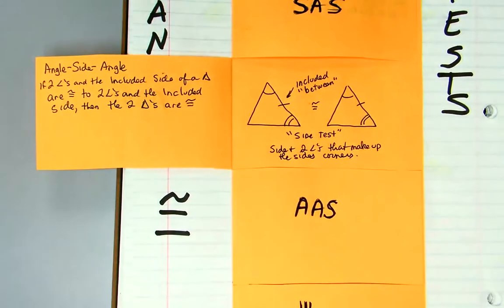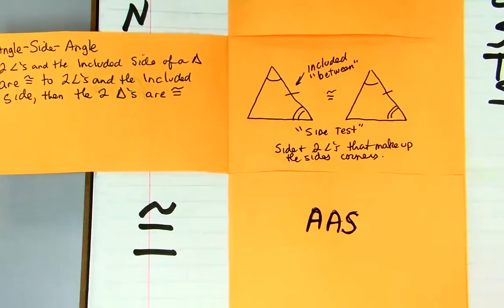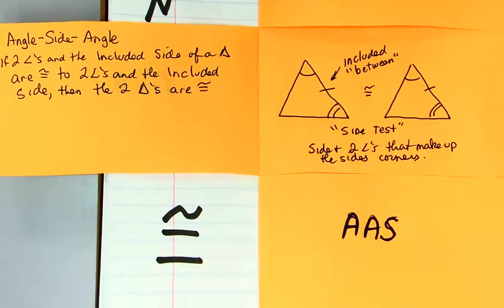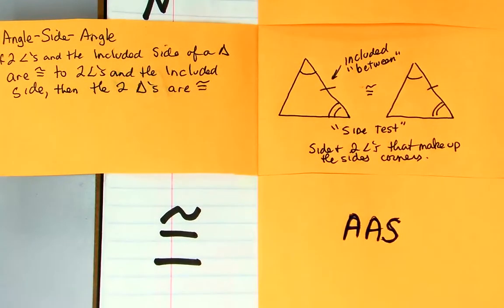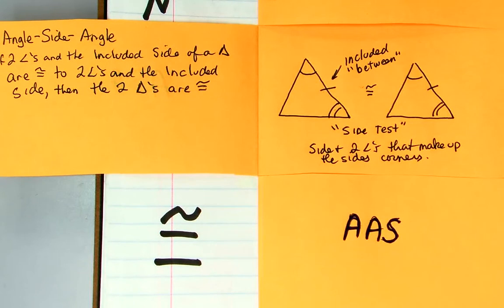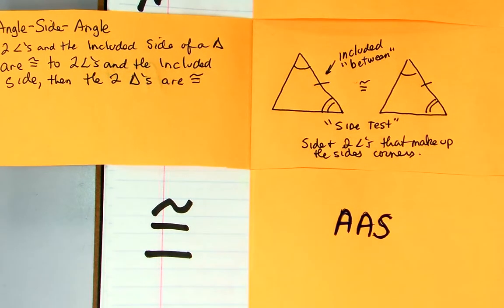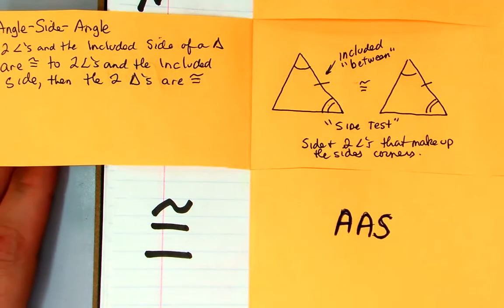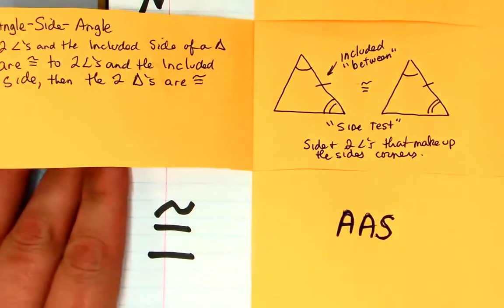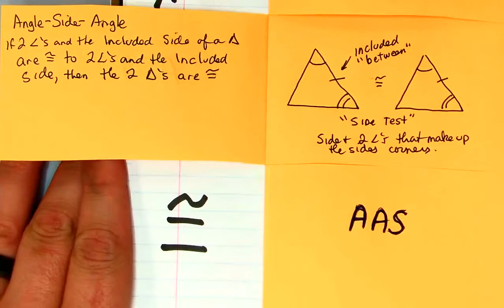You can think of that as the side and the two angles that make up the side's corners. That might be an easier way - just another way of thinking about this stuff. That's what I'm trying to give you, as many different ways to think about this as possible. Are there any questions on angle-side-angle?